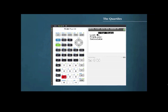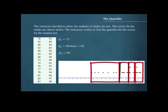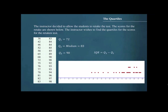We press 2nd, L2 to change the specified list to L2, then cursor down to calculate and press ENTER. Cursor down to the bottom and find that the first quartile is 72, the median or second quartile is 83, and the third quartile is 90. Again, a dot plot can show us the span of data points in each quartile. The interquartile range of this data set is 18, so the middle 50% of the data values are concentrated into a shorter span for this second set of data.